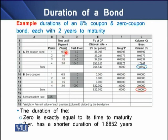We have the time until the last payment, starting from 0.5 year, then 1 year, 1.5 years, and ending on 2 years. We have cash flows of $40 for each half-year period, and in the last period we have two cash flows: the principal face value of the bond and the half-year coupon payment.